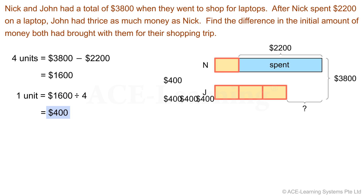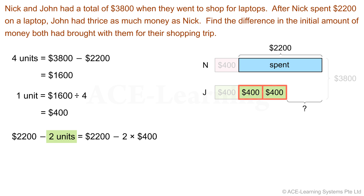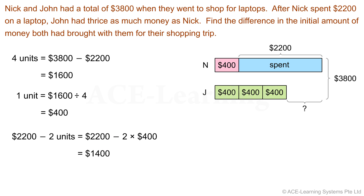Let's place $400 in each of the equal units in the model. We have more information now to help us find the value represented by the question mark. The solution is found when we take $2,200 and subtract two units from it. $2,200 − (2 × $400) = $2,200 − $800 = $1,400. Have we solved the problem? Is the solution correct? Let's proceed to Step 4, a very important step.